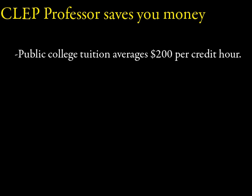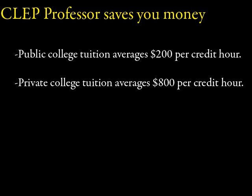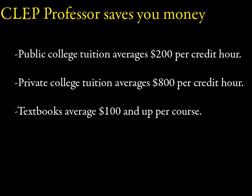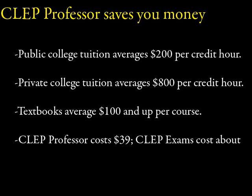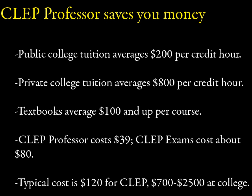There's a common saying that time is money, so if you can save some time on college, you're probably going to save some money on college expenditures as well. For example, public college tuition averages $200 per credit hour, and a typical course is three to four credit hours. Private college tuition averages about $800 per credit hour. And don't forget your textbooks — textbooks average $100 and up per course. Now compare that with CLEP Professor and the cost of a CLEP exam. CLEP Professor costs about $39; CLEP exams cost about $80. So for a course worth three hours of credit, the typical cost using CLEP Professor and then taking a CLEP exam would be around $120, compared to $700 to $2,500 for the full-length course at a public or private college.